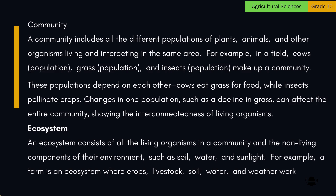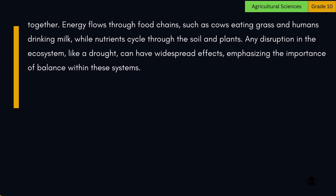An ecosystem consists of all the living organisms in a community and the non-living components of their environment, such as soil, water, and sunlight. For example, a farm is an ecosystem where crops, livestock, soil, water, and weather work together. Energy flows through food chains, such as cows eating grass and humans drinking milk, while nutrients cycle through the soil and plants. Any disruption in the ecosystem, like a drought, can have widespread effects, emphasizing the importance of balance within these systems.